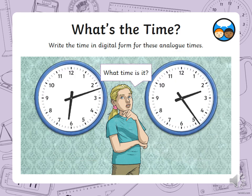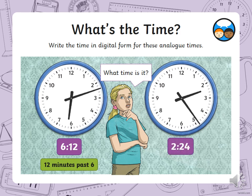Now write the time in digital form for these analog times. Have a look at these analog clocks and write down what time is shown on each one. So 6:12 — the hour hand has gone just past 6 and the minute hand has gone past the 2. 1 is 5, 2 is 10 because the intervals go up in 5s, so 5, 10, and then the 2. And this one is 2:24 — the hour hand has just gone past the 2 and the minute has gone to 24.